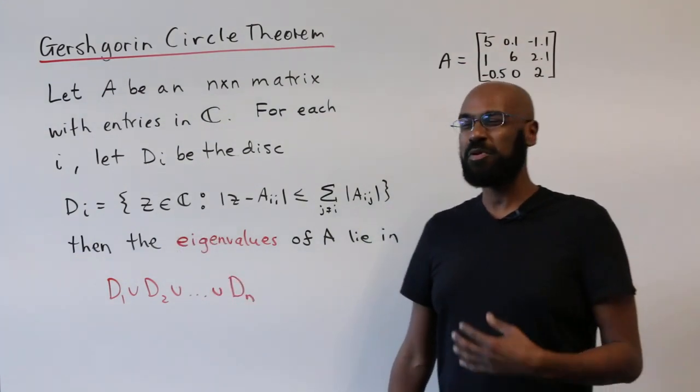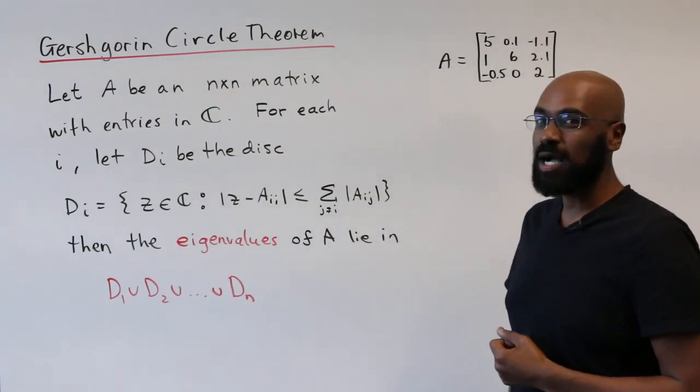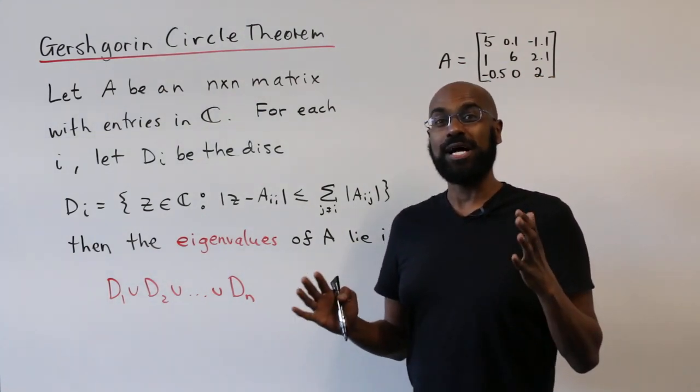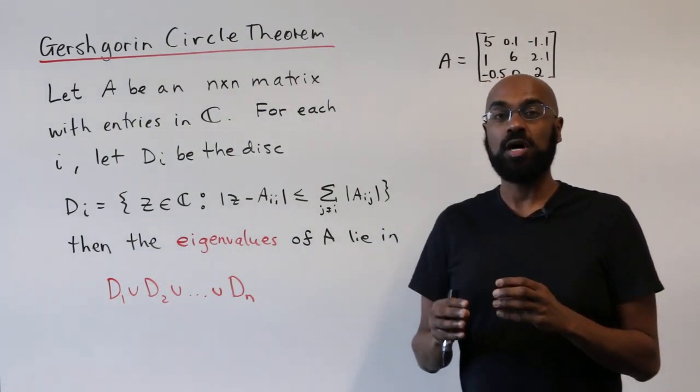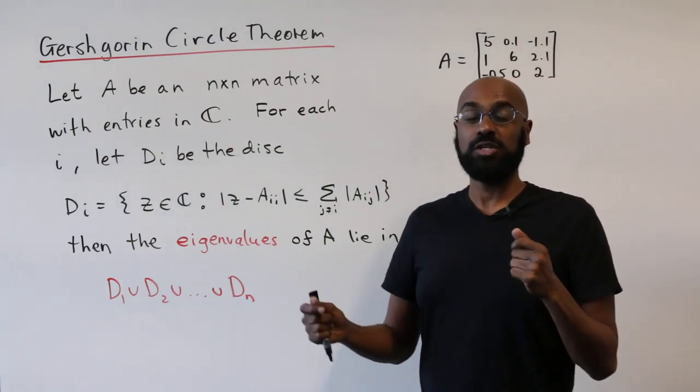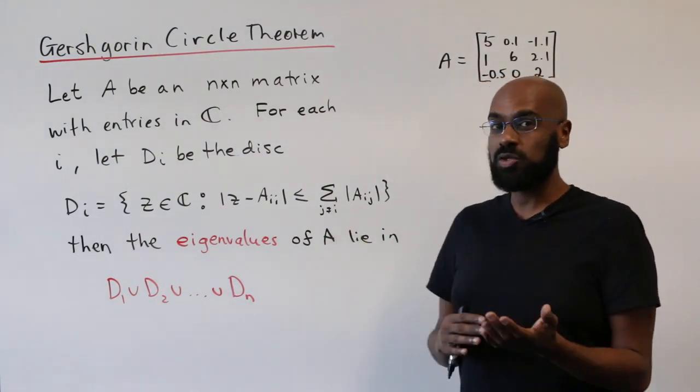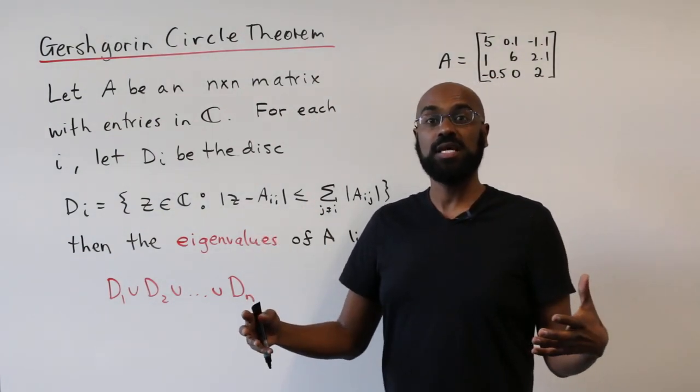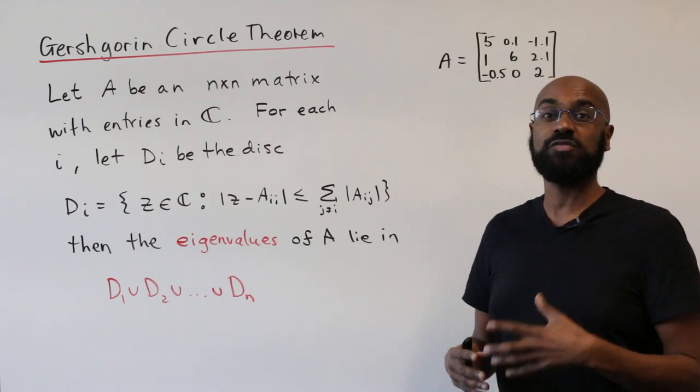Hey, welcome to today's video. I'm Prof Omar, and today we're going to talk about the Gershgorin Circle Theorem, an interesting theorem in linear algebra that gives you estimates on where the eigenvalues of a matrix lie. And it has interesting consequences in proving the invertibility of certain classes of matrices, and also bounds on eigenvalues for other classes.